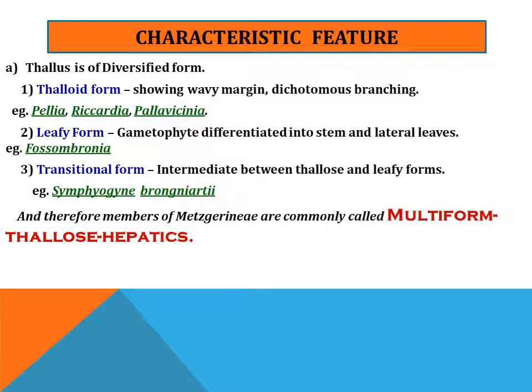The characteristic features of this order: the thallus is of diversified form. The first is the thaloid form, which shows wavy margin and dichotomous branching — examples include Pellia, Riccardia, and Pallavicinia. The second is the leafy form, in which the gametophyte is differentiated into stem and lateral leaves. The third is the transitional form, intermediate between thaloid and leafy forms, and therefore members of this order are commonly called multi-form thallus hepatics.